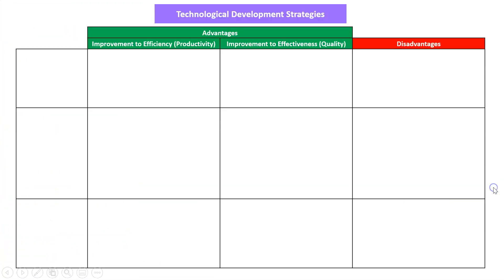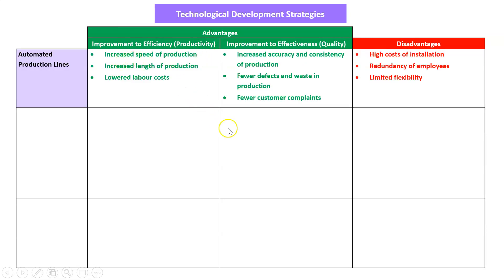For each strategy we need to know how it improves efficiency or productivity, effectiveness and quality, and also some disadvantages. Looking at automation: it increases the speed you can work at and how long you can work — you don't need to be there 9 to 5, you can work 24/7 — therefore you have lower labor costs, all improving efficiency. In terms of effectiveness, you get a more accurate and consistent product with fewer defects and waste, leading to fewer customer complaints. Disadvantages include high installation costs, potential CSR issues resulting in redundancies, and limited flexibility, since machines can't adjust to unexpected events as well as people can.